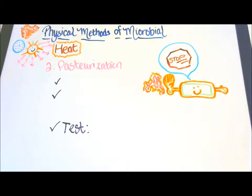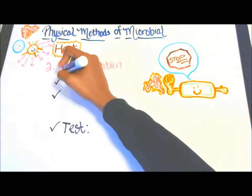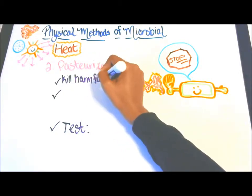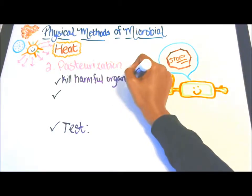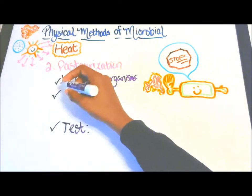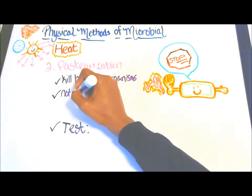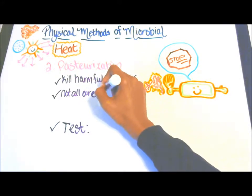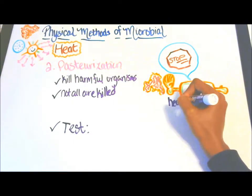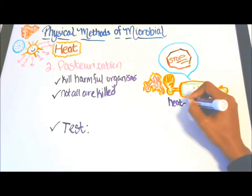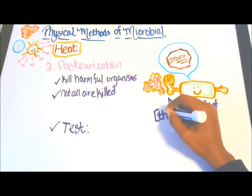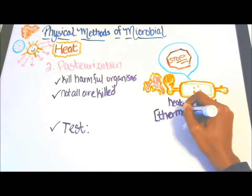Louis Pasteur was known for pasteurization — the use of heat to kill harmful organisms. Now in pasteurization, not all bacteria are killed in the milk. There are some heat-resistant bacteria that are called thermoduric bacteria.